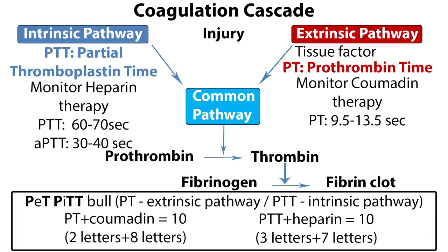The PT is usually performed with a partial thromboplastin time, or PTT, and together they assess the amount and function of the coagulation factors. PTT is called partial because of the absence of tissue factor. The activated partial thromboplastin time, or APTT, tests for the same functions as PTT but is more sensitive and results in a narrower reference range. It is most commonly used to monitor heparin therapy, with the reference range for PTT at 60-70 seconds and APTT at 30-40 seconds. The PTT and APTT evaluate the function of the intrinsic clotting system. Remember the mnemonic PET-PIT-BULL: PT evaluates the extrinsic pathway, and PTT the intrinsic pathway. Also remember the sum of 10: PT is used to monitor Coumadin therapy and the letters add up to 10; PTT is used to monitor heparin therapy and those letters add up to 10 also.